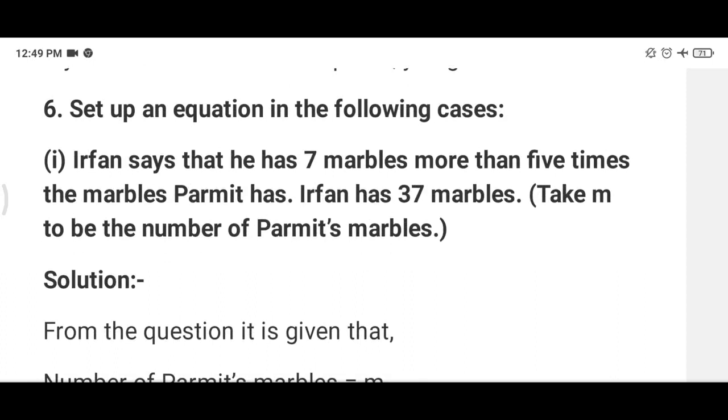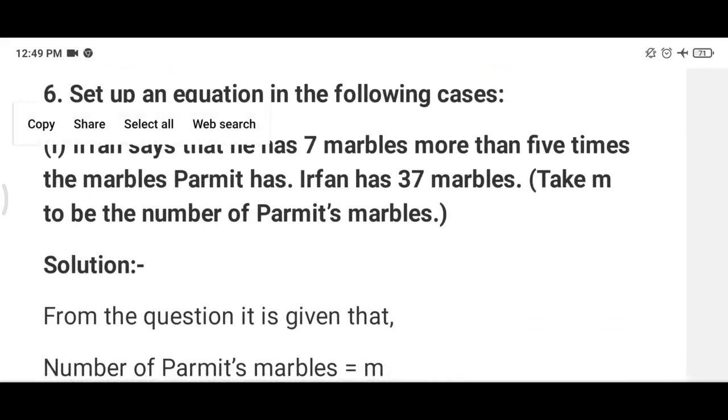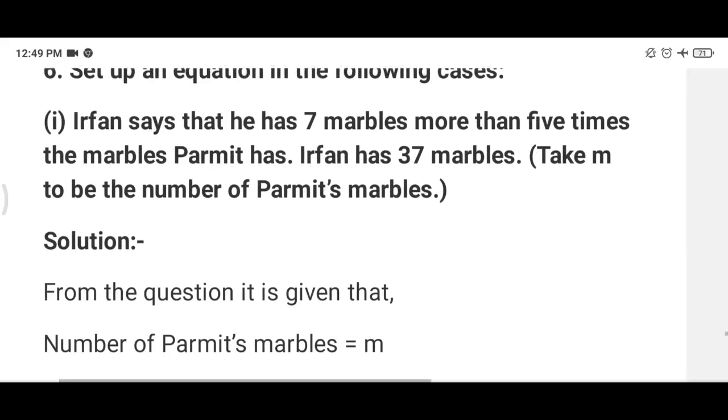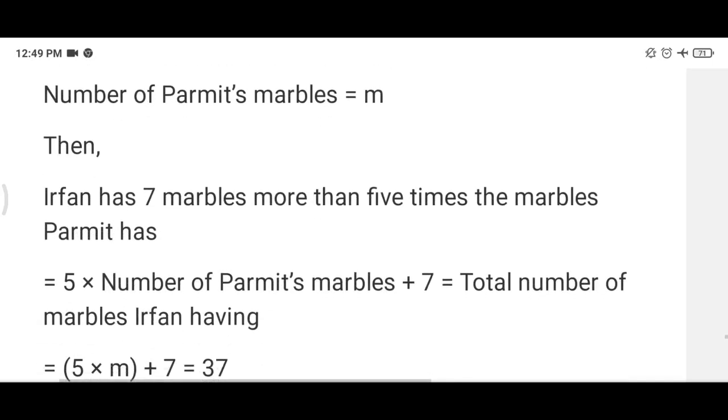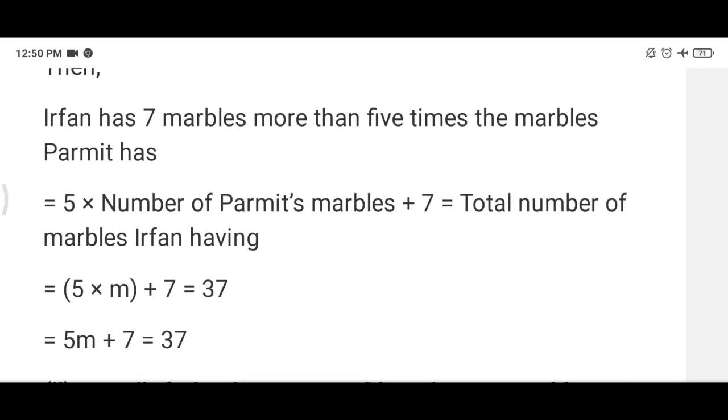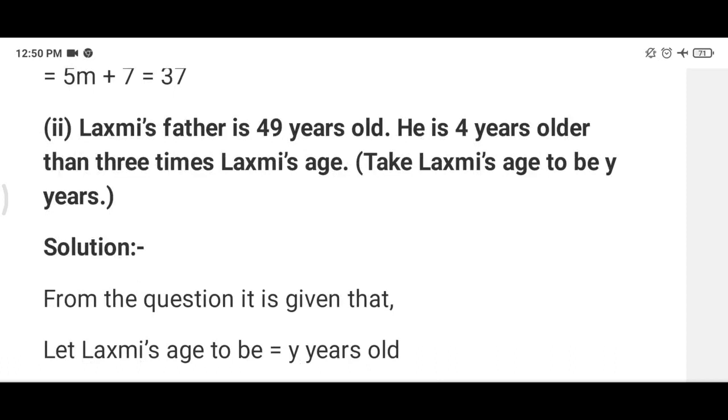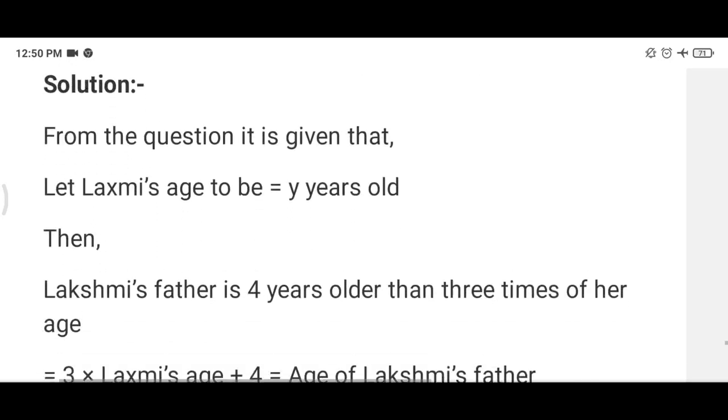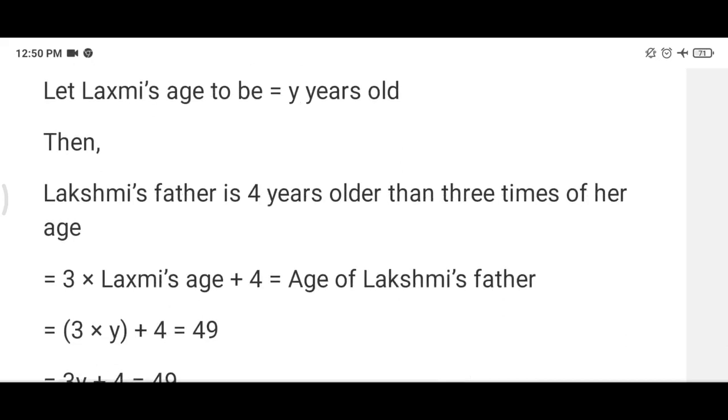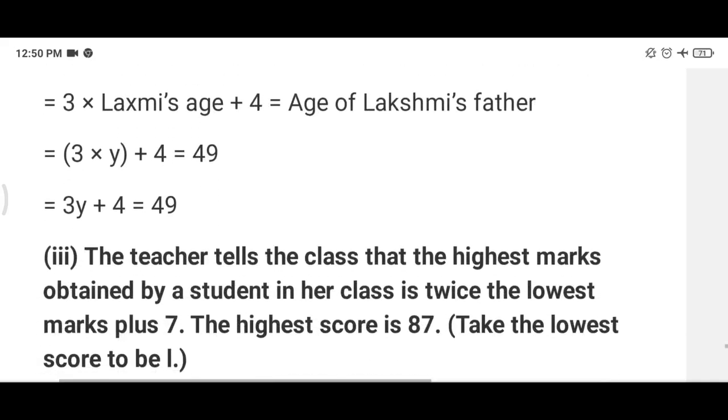Now you have to set up an equation for the following cases. Irfan said that he has 7 marbles more than 5 times the marbles Parmeet has. Irfan has 37. So Irfan will have 5 multiplied by number of Parmeet marbles plus 7. So 5m plus 7 is equal to 37. This will be the equation. Lakshmi father age is 49 years. He is 4 years older than 3 times Lakshmi age. So here we have taken Lakshmi age as y. Lakshmi father is 4 years older than 3 times, so he will be 3y plus 4. And he is 49 years old. So we will write 3y plus 4 is equal to 49.